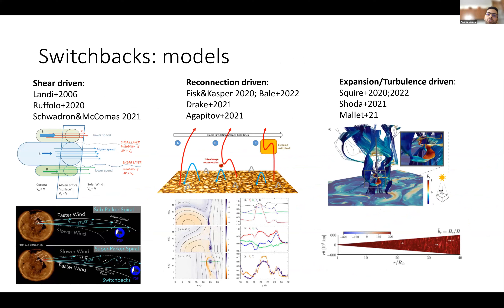Much effort has been made toward modeling this magnetic field deflection, and nowadays we have many models, though we are not able to pinpoint with 100% accuracy the most valid one. These models are usually divided into three main categories: shear-driven models, reconnection-driven models, and expansion and turbulence-driven models.